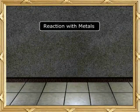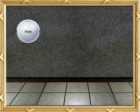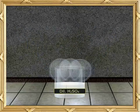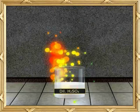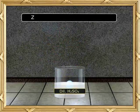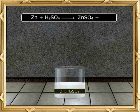Reaction with Metals: Metals like Iron, Zinc, and Magnesium react with dilute sulfuric acid and liberate hydrogen. Zn + H2SO4 → ZnSO4 + H2.